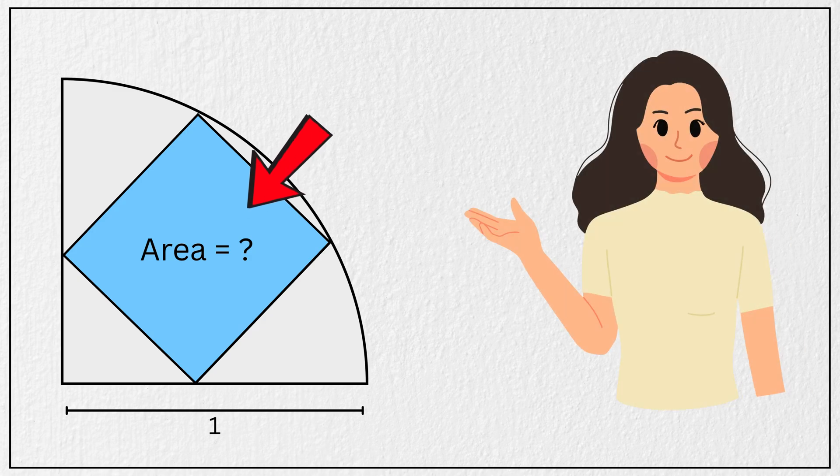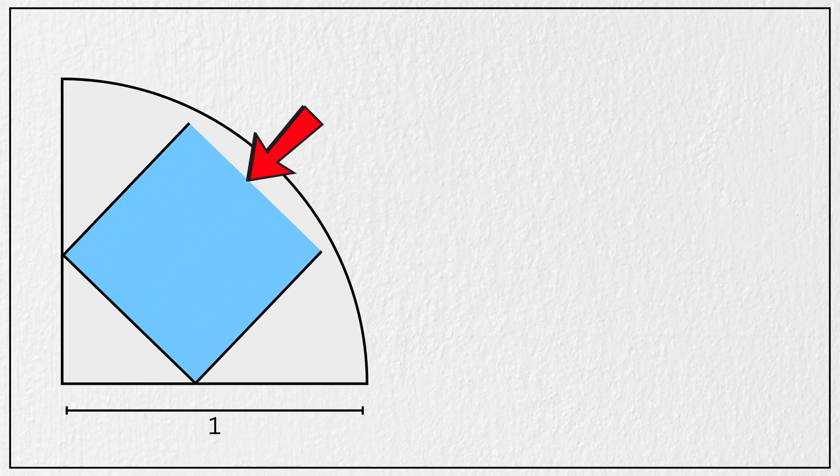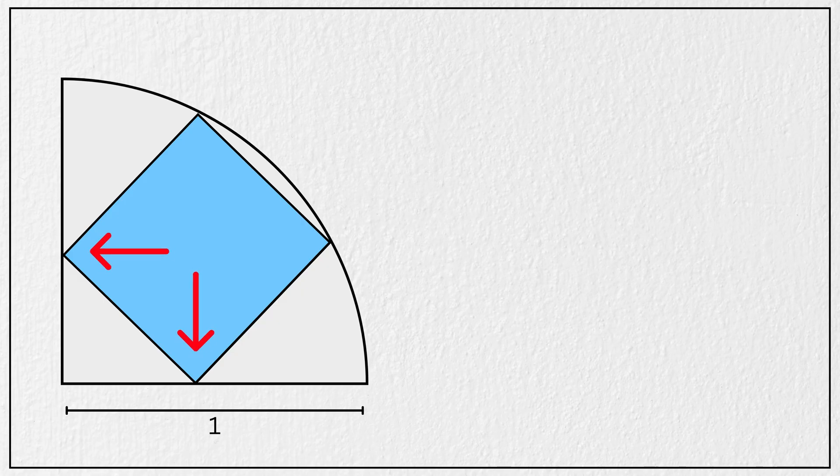Can you solve this geometry question asked in SAT exam? We are given a quarter circle with a radius of one unit like this. Inside this quarter circle, a tilted square is placed in such a way that each of its corners touches the arc and sides of the quarter circle, just like this.